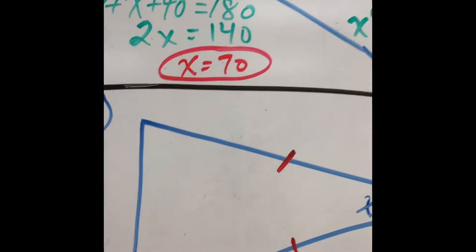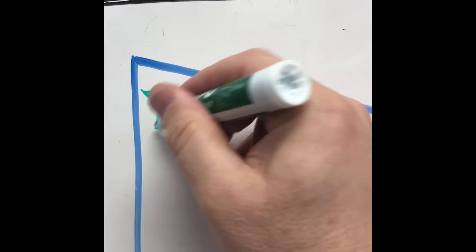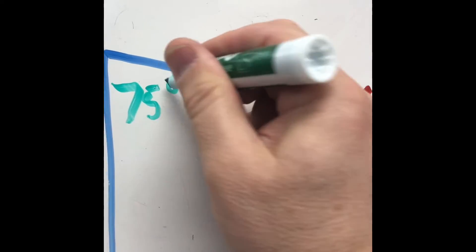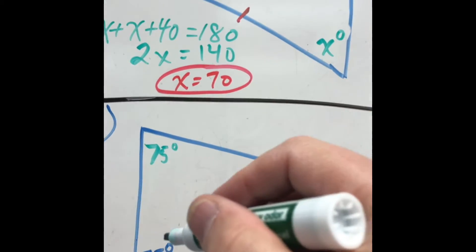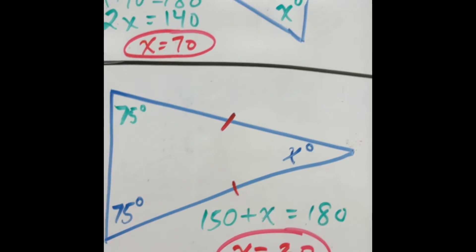Over here, if this is 75, then this is 75. Now, I'm going to say x plus 75 plus 75 equals 180. x equals 30.